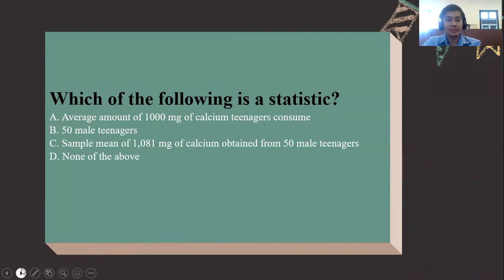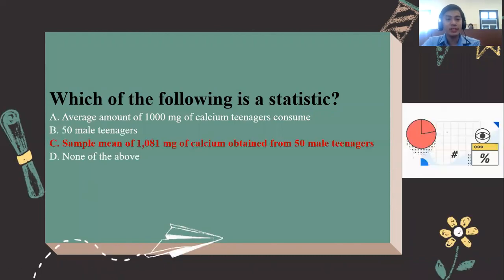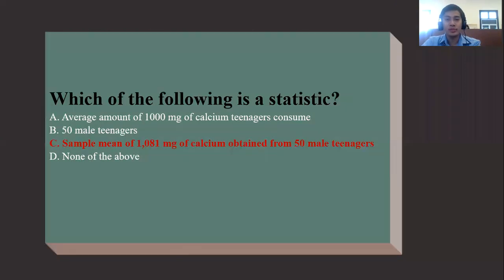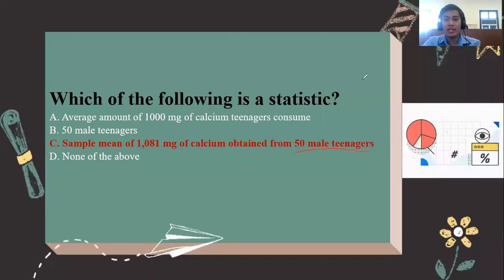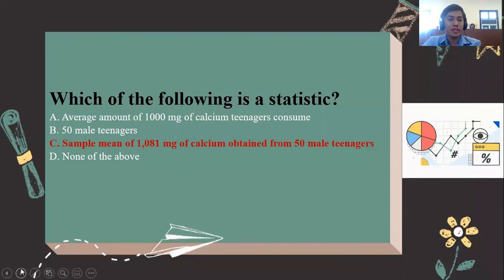Correct. The answer is C: sample mean of 1081 mg of calcium obtained from 50 male teenagers. Notice that from the given example, the 50 male teenagers describe the sample, and the sample mean obtained is 1081 mg. So it is very easy to distinguish the difference between a population parameter and a sample statistic.